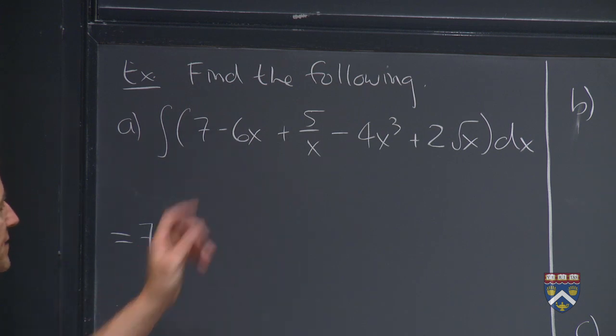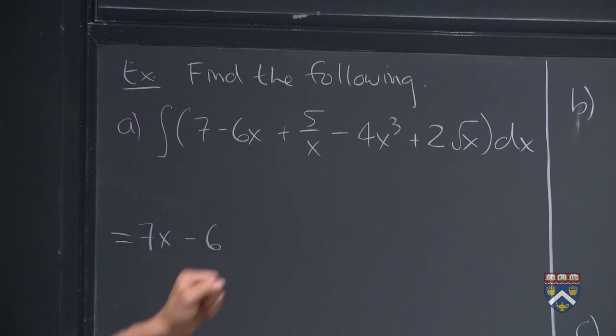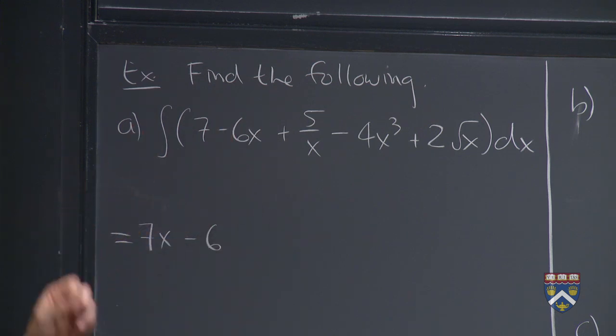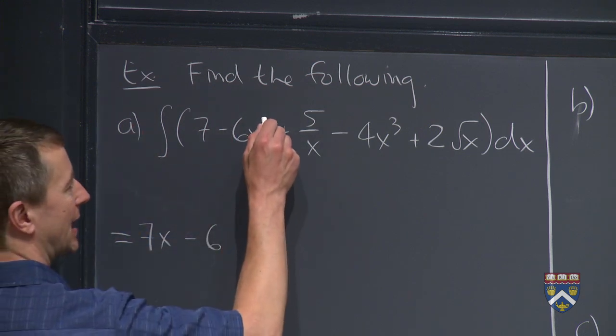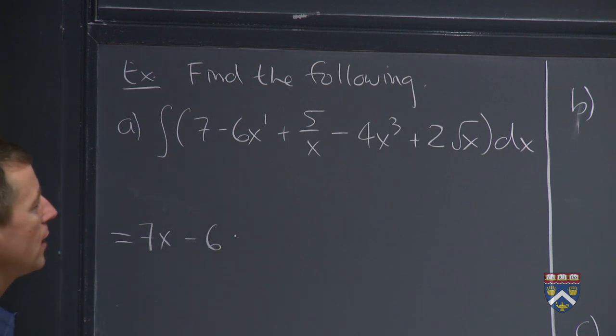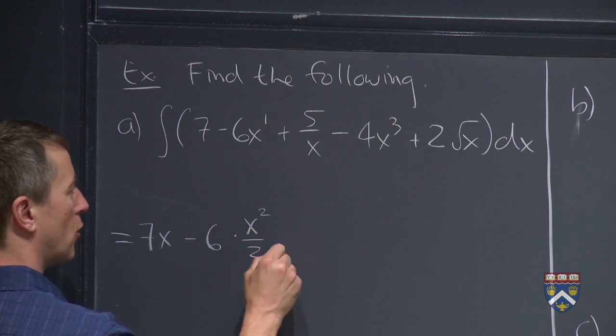Now how about this negative 6? That's a constant multiple. So we can just pull it out front and ask ourselves, we now need a function whose derivative is x. So x is like saying x to the first power. So by our first big rule for powers from before, what are we supposed to do? That must have been x squared over 2.